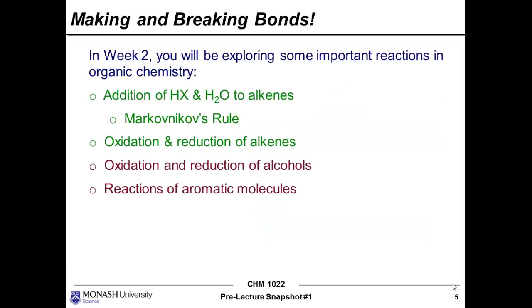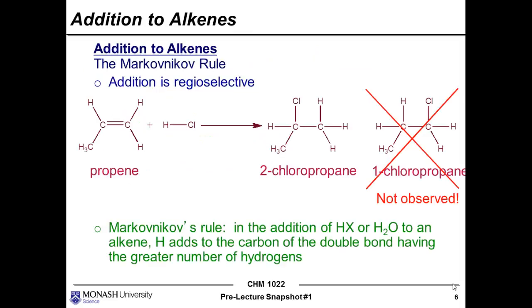In week two you're going to be exploring some important reactions in organic chemistry — addition, substitution, and some oxidation and reduction reactions as well. Let's kick-start the conversation with addition to alkenes. Here we have the molecule propene reacting with hydrochloric acid. One interesting thing about this reaction is that theoretically there are two possible products. The hydrogen chloride molecule splits into two: hydrogen bonds to one of the carbons and the chlorine atom bonds to a different carbon involved in the double bond. The two possible products are 2-chloropropane and 1-chloropropane, and it just so happens that 1-chloropropane is never observed for this reaction.